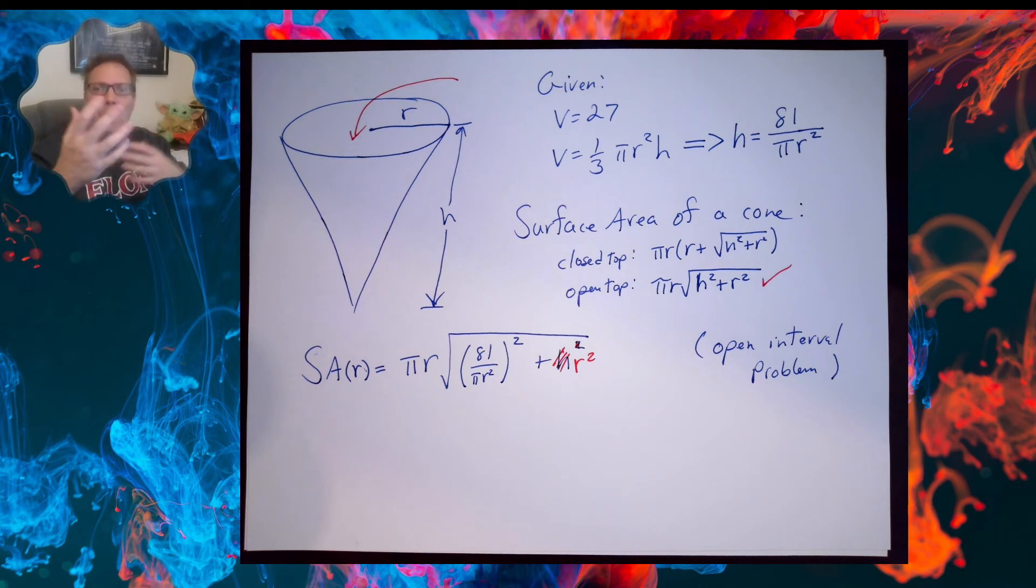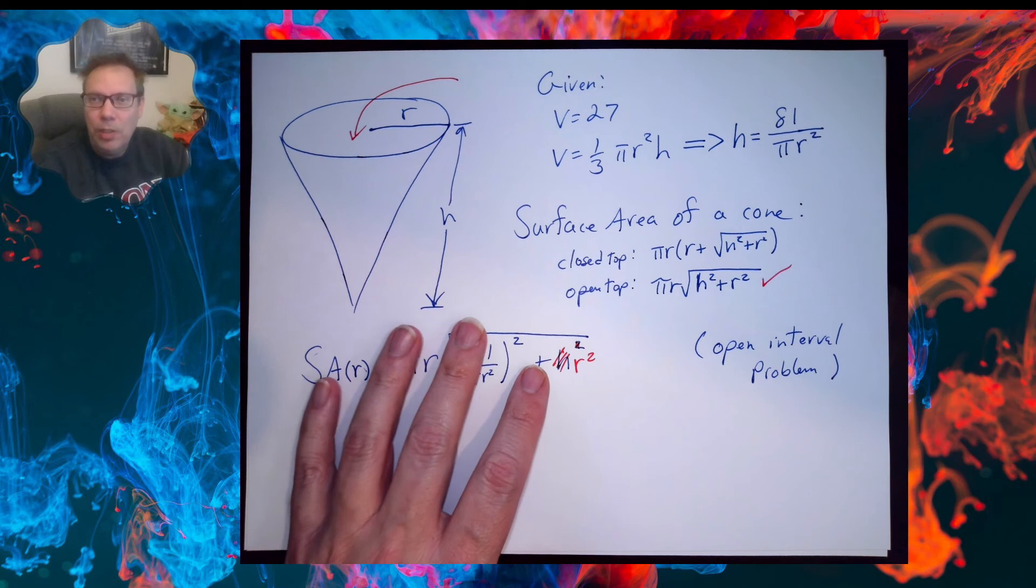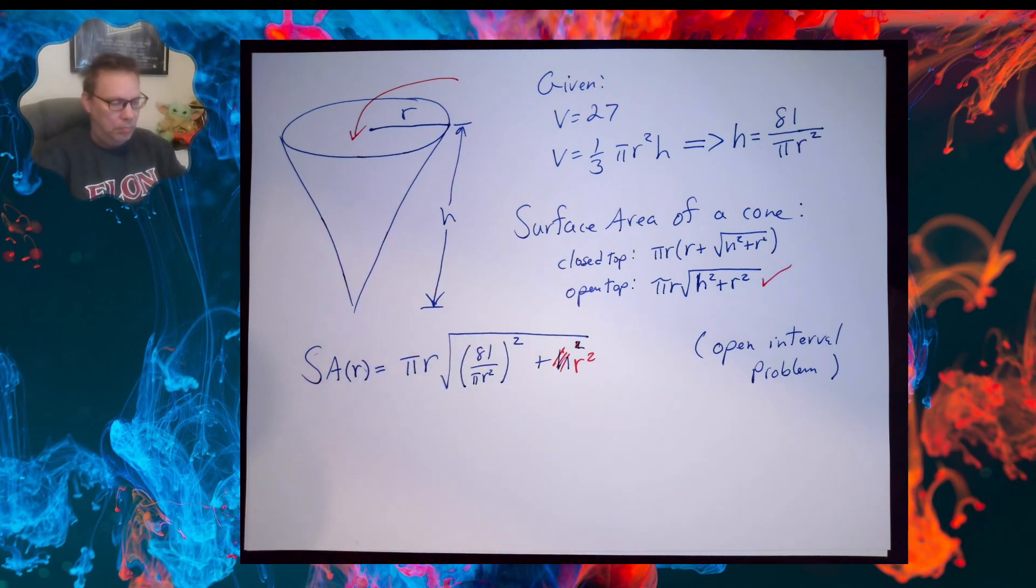So at this point I hope you know how to finish this problem. You're going to have to take a derivative. I suggest using some software to do this, setting that derivative equal to zero, finding the critical values, and then going through a first or second derivative test. For this I suggest using the first derivative test to actually classify your critical values in terms of mins and maxes.